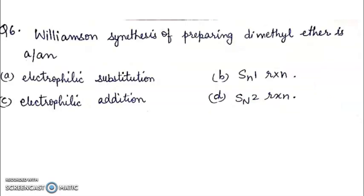Question 6: Williamson synthesis of preparing dimethyl ether is: Electrophilic substitution, SN1 reaction, electrophilic addition, or SN2 reaction. The correct answer is SN2 reaction.